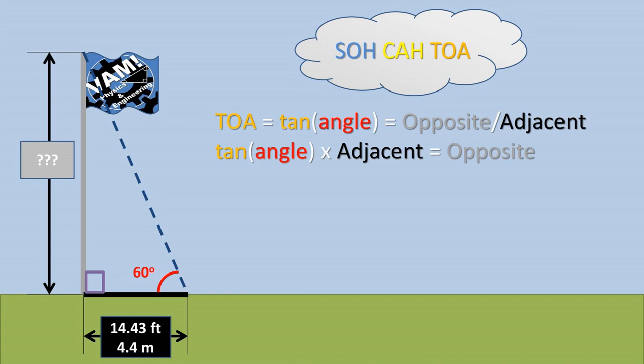Rearranging the formula to get what we are solving for opposite to one side, we are left with the tangent of the angle times the adjacent side, in this case the shadow, is equal to the opposite side, in this case the flagpole height.